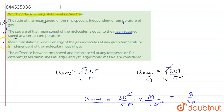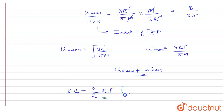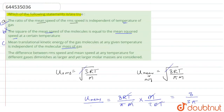Statement C says: mean translational kinetic energy of a gas molecule at any temperature is independent of the molecular mass of the gas. As we know, kinetic energy equals (3/2)RT. From this equation, we can easily say that it is independent of molar mass. So option C is correct.